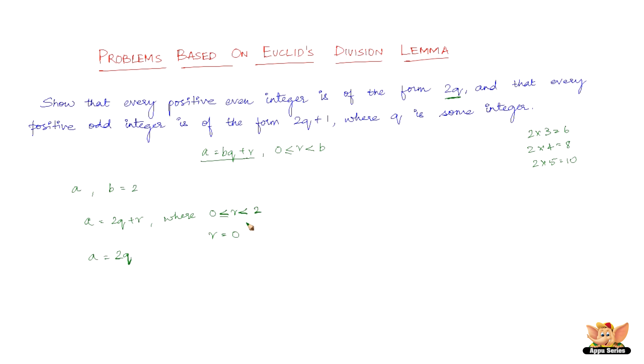And then what else can r be? It can be greater than 0 but it has to be less than 2. So the only number greater than 0 and less than 2 is obviously 1. So when r equals 1, what happens? We get a equals 2q plus 1, because in the place of r we substitute 1.